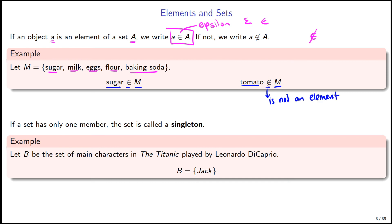Let's do two more examples. Flour is in the set, so flour is an element of M. This is a list of baking ingredients, so something like a table is not going to be in our set M. Similarly, if we have a group of people in Ling 324, we can say Taylor is an element of the students taking Ling 324, while someone named Jungmin, who is not in this course, would not be an element of our Ling 324 set.